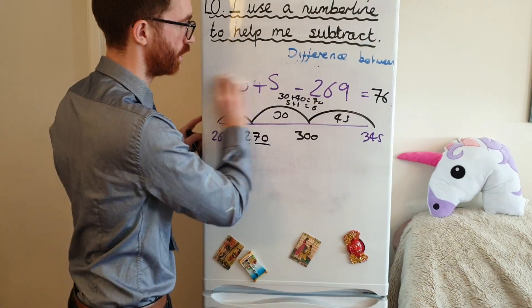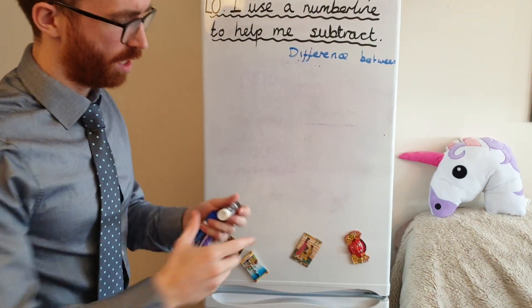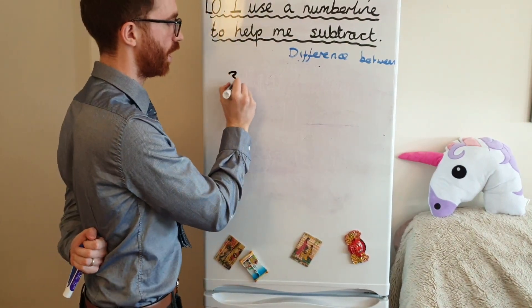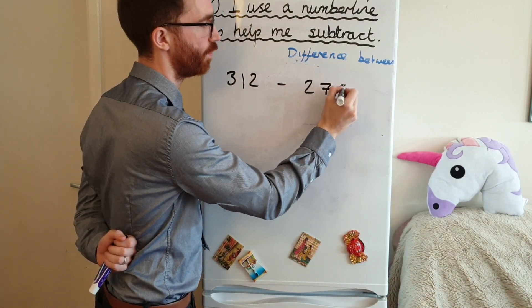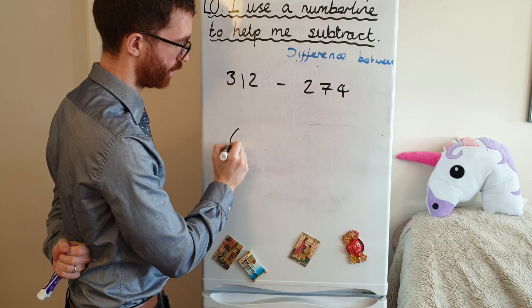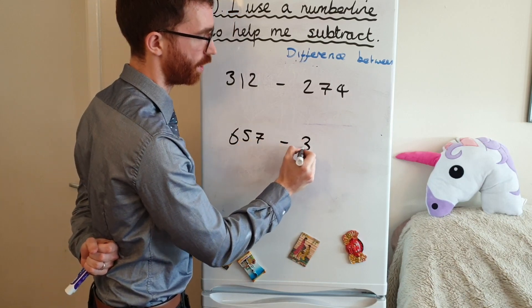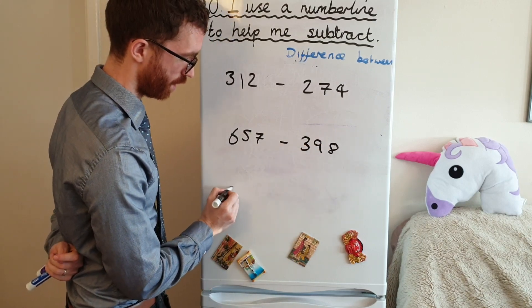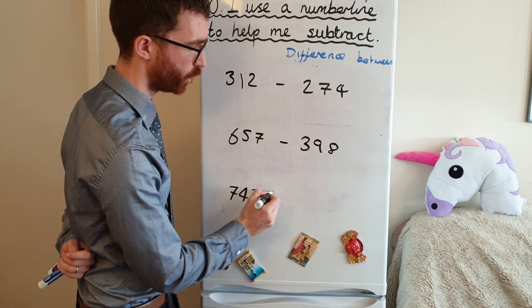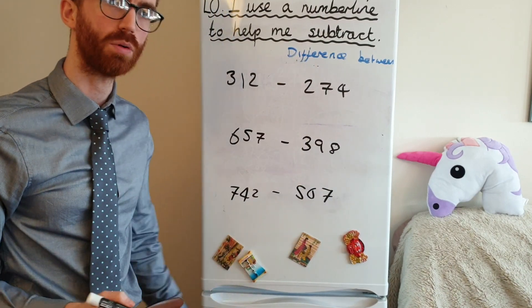So what I'm going to get you to do is have a little go at some of these questions. So I have questions for you. We'll have 312 take away 274. We'll have 657 take away 398. And we'll have one more, which will just be 742 take away 567. Okay, off you go. Pause.